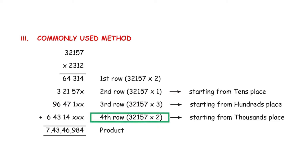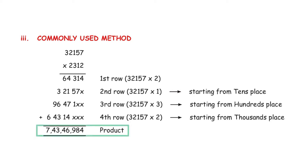For the fourth row, multiply 32,157 × 2, starting from the thousands place — cross out the ones, tens, and hundreds. Since the multiplier has 4 digits, there are 4 rows. Adding all 4 rows gives the answer: 7,43,46,984.